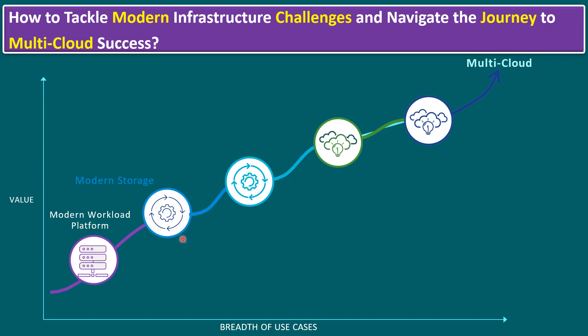Coming to the third stage: workload management and automation. Workload management is a feature within VMware vCenter Server. When we enable workload management, it configures vSphere with Tanzu — Tanzu being an enterprise-grade Kubernetes platform. We can run simultaneously multiple virtual machines, and concurrently along with our virtual machines, we can also run container virtual machines.